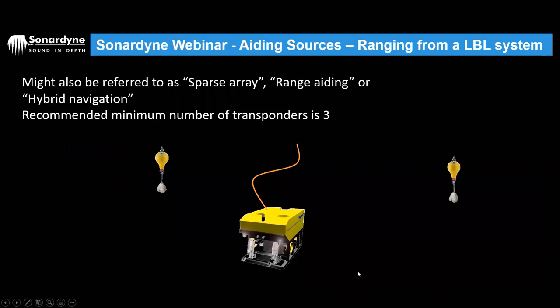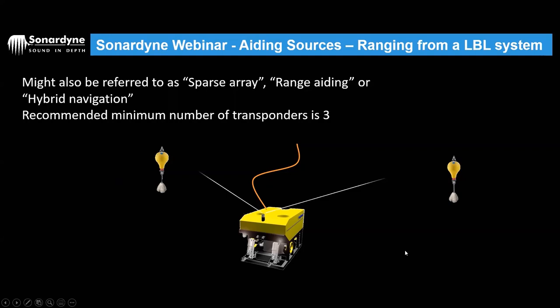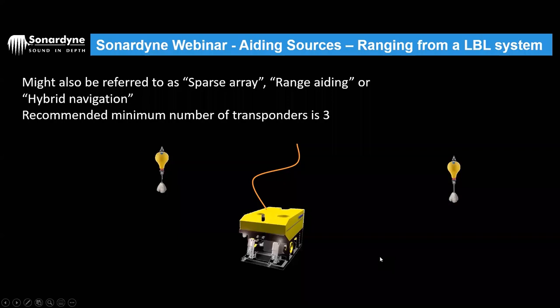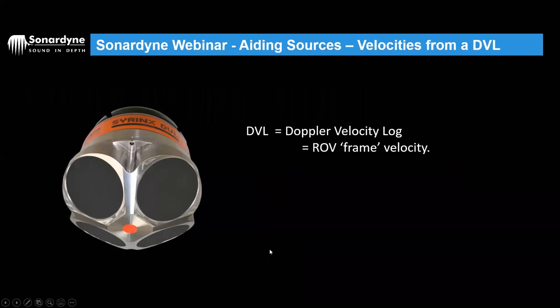We can also use range aiding - sometimes called sparse array or hybrid navigation. This isn't technically LBL-aided INS because we're not feeding an LBL-derived position to the INS; we're feeding the range information from the LBL system and letting the INS produce its own position estimate based on that range information.